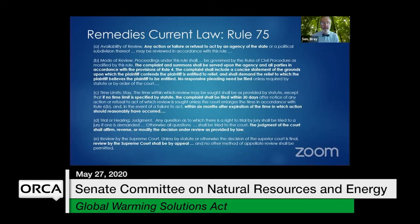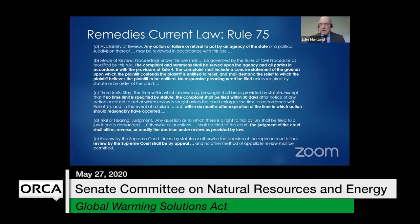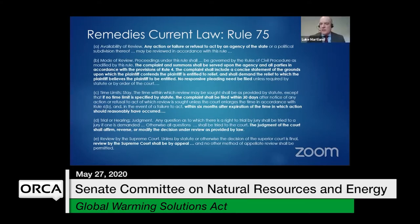A committee member asks whether a failure to act — for instance, operating an agency in a manner that fails to maintain water quality — would be sufficient to bring an action under Rule 75. The presenter responds that such an action would probably be better brought under the provision they are about to discuss, which concerns situations where action is taken but is insufficient to achieve the goal set forth in law.